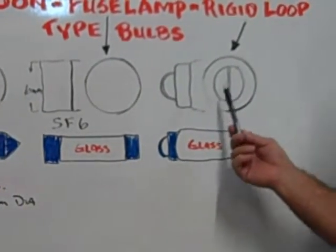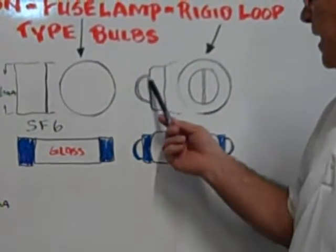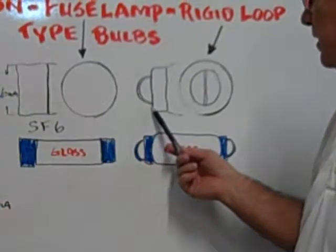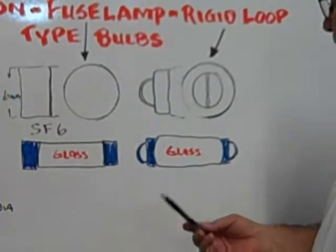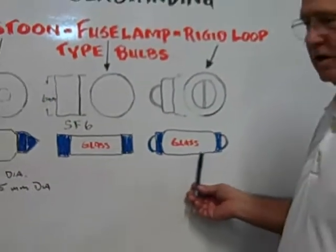The last one is the Rigid Loop, and it has a wire loop that comes out at either end. In the center, of course, is the glass tube.